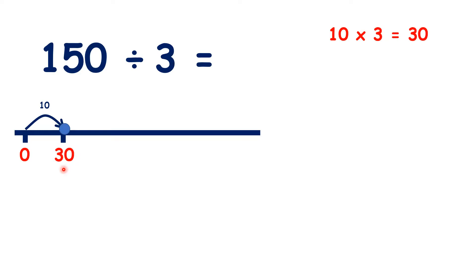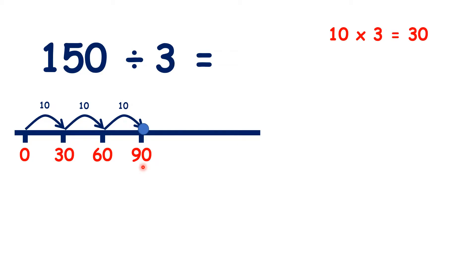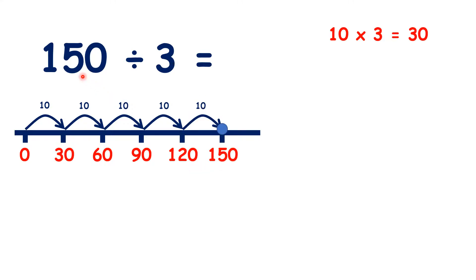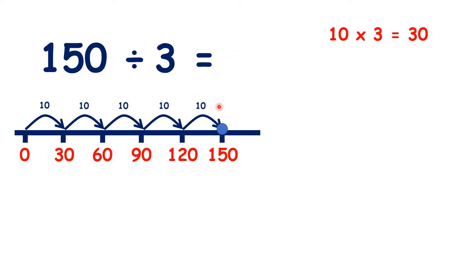10 threes is 30. Then if we count on another 10 threes, we have another 30, so that takes us to 60. Another 10 threes takes us to 90, then 120, and then another 10 threes takes us to our dividend — 150. So altogether, we counted on 10 steps of 3 five times, so that's 50 steps of 3. Our answer is 50.